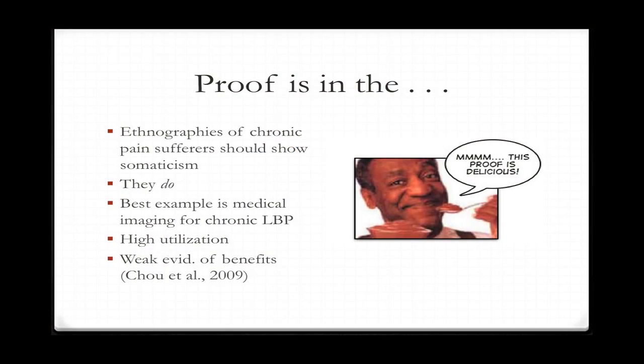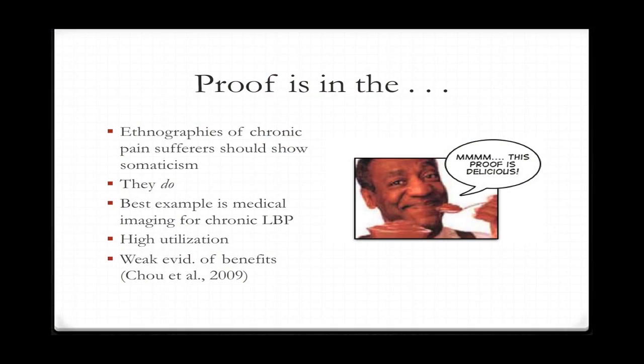This is a problem for somaticism — it handles many illness complaints very well, but pain is one it handles less well, and there are historical reasons for that. The proof is in the pudding: if there's credence to the historical narrative I'm suggesting, we should be able to find it in stories about pain. When we look at ethnographies of chronic pain sufferers, they do show somaticism — the best example being medical imaging for chronic low back pain.